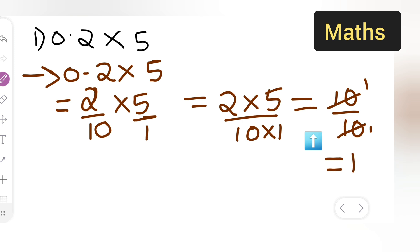Or you can try it this way: 0.2 multiplied by 5.